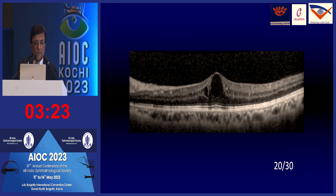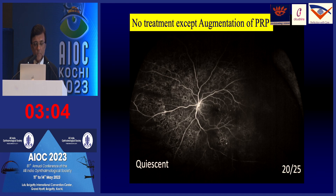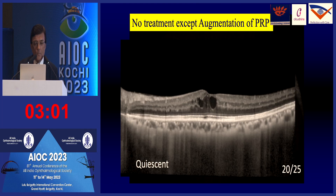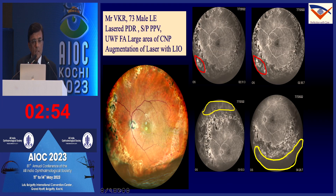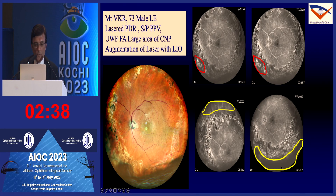For recurrent bleeds in patients who had been lasered, wide-field angiography identified large areas of capillary non-perfusion and peripheral NVEs that were specifically targeted. In a patient who had undergone vitrectomy but had recurrent vitreous hemorrhage, a fluid-air exchange was done, the retina settled, then angiogram was performed showing peripheral NVE and capillary non-perfusion. This patient was followed for about seven months without further bleeding after targeted treatment.